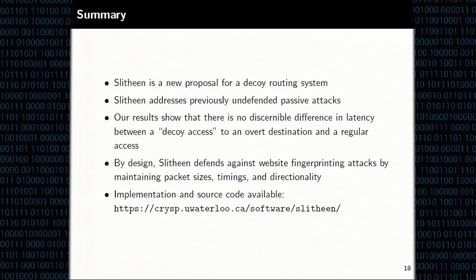Q (Vern Paxson, Berkeley): Your system should parallelize really nicely, so it would be easy to roll out more hardware — there's a cost issue, but is that right? A: Definitely. The operations that could add latency are simply a decrypt, maybe a string search, a memcopy, and an encrypt. If we have multiple connections at once, it can be easily parallelized.